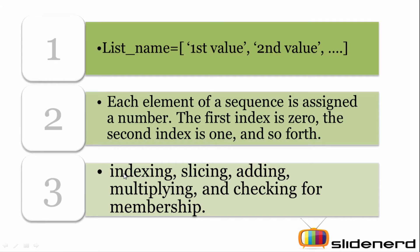You can perform the following operations with the list: indexing — that is picking out or adding a value — and slicing, which is picking out a value from a range of index positions. You can also perform adding and multiplying operations. Let's see each of them in detail.